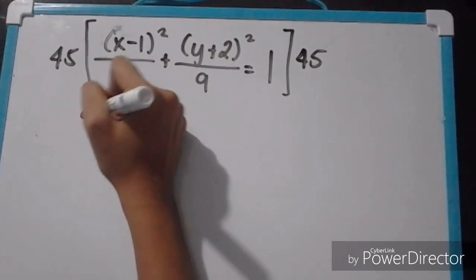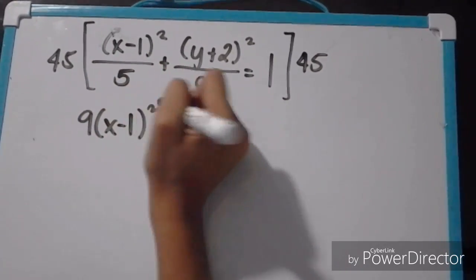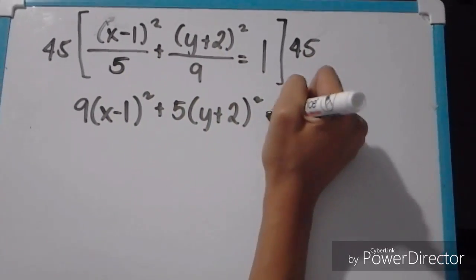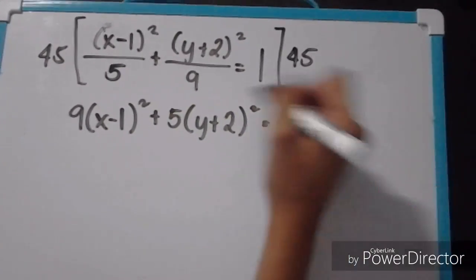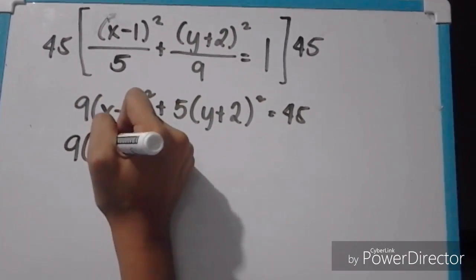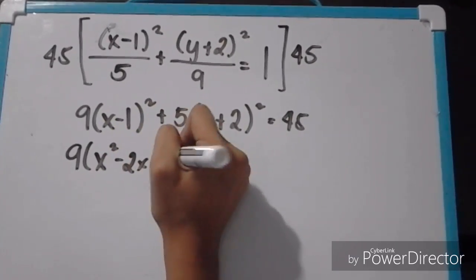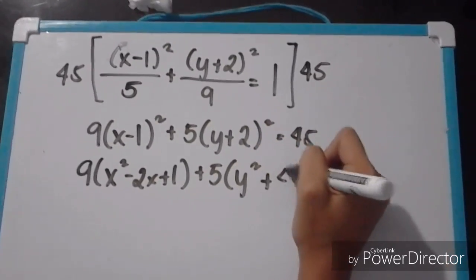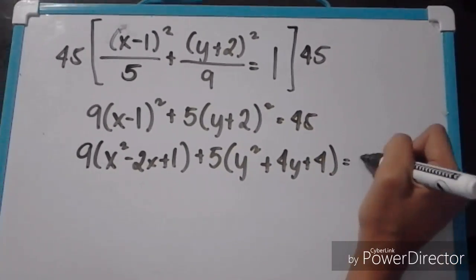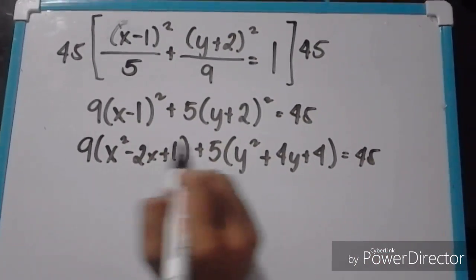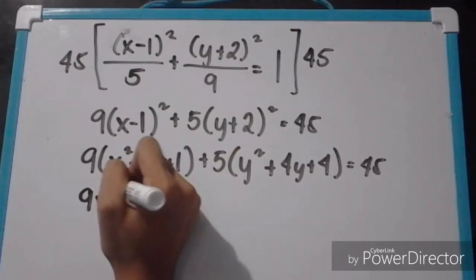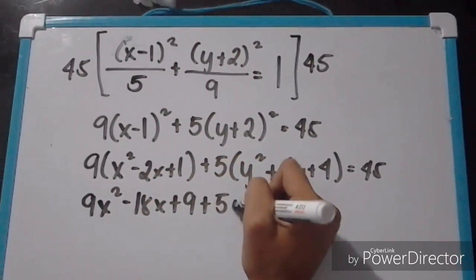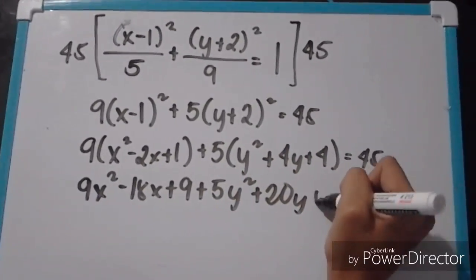That will give us 9 times the quantity of x minus 1 squared, plus 5 times the quantity of y plus 2 squared, is equal to 45. Now we will expand the binomials, so it will be 9 times the quantity of x squared minus 2x plus 1, plus 5 times the quantity of y squared plus 4y plus 4, is equal to 45. Now we will distribute 9 and 5, giving us 9x squared minus 18x plus 9, plus 5y squared plus 20y plus 20.